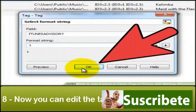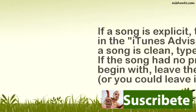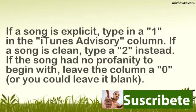Step 8: Now you can edit the tag for the files. If a song is explicit, type in 1 in the iTunes Advisory column. If a song is clean, type 2 instead. If the song had no profanity to begin with, leave the column 0, or you could leave it blank.